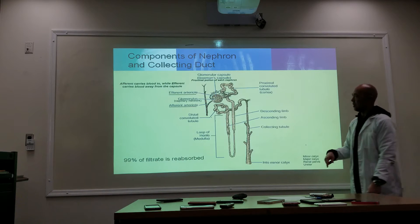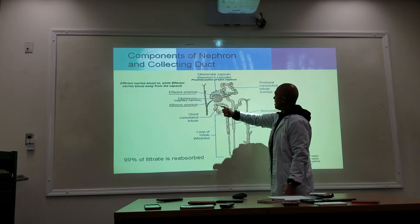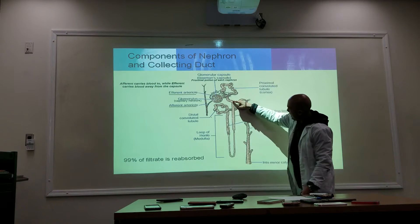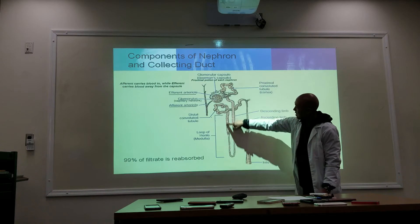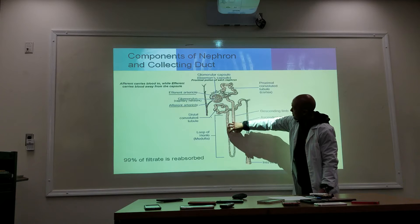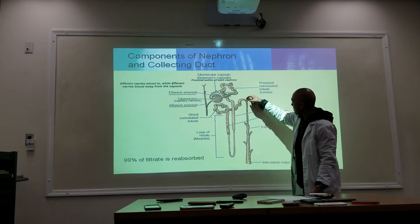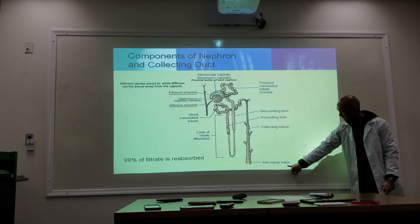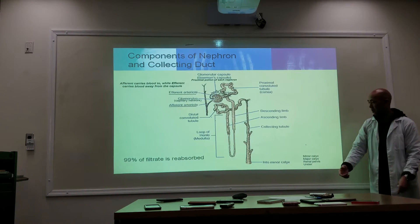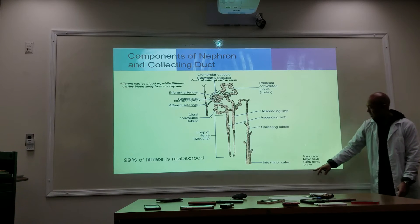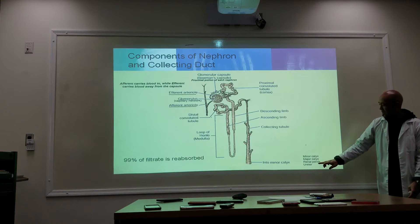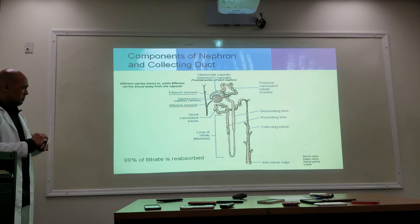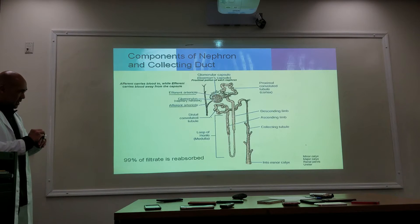Filtrate is produced in the nephron — 99% is reabsorbed by the body, and the remaining 1% becomes urine. The fluid makes its way from Bowman's capsule through the proximal convoluted tubule, down the descending loop, up the ascending loop — this entire area is called the loop of Henle. Then through the distal convoluted tubule and down the collecting tubules. From there it goes into the minor calyx, major calyx, renal pelvis, and then out the ureter.